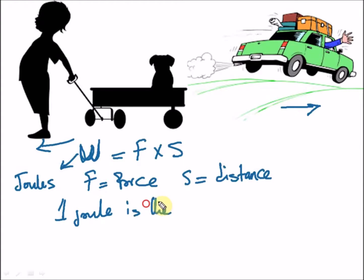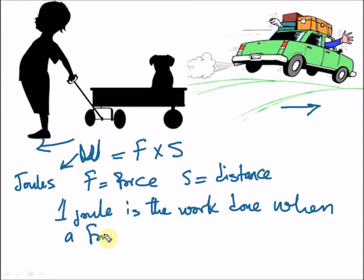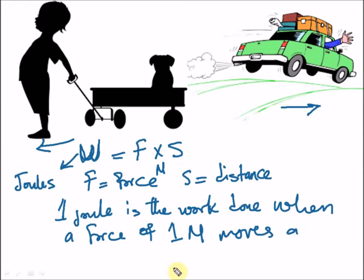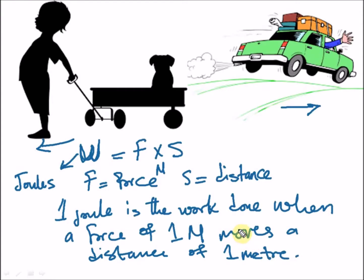One joule is the work done when a force of one newton — and force is measured in newtons — moves a distance of one meter. So one joule of work is done when a force of one newton moves a distance of one meter.